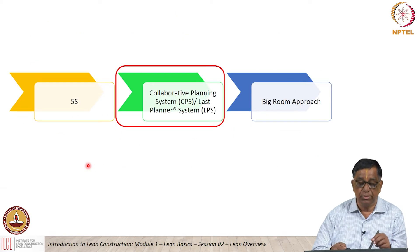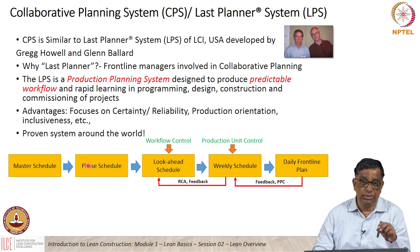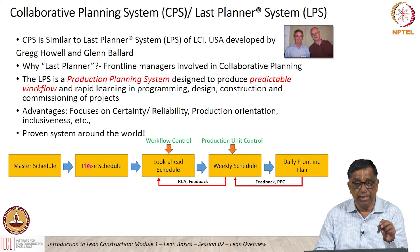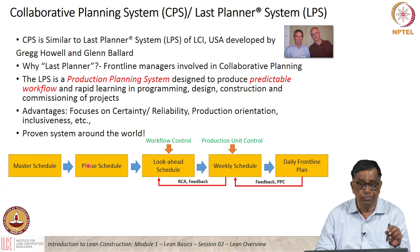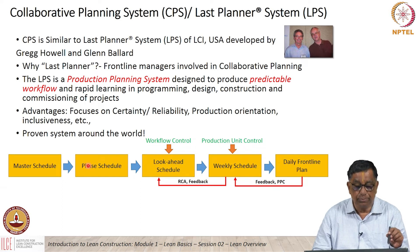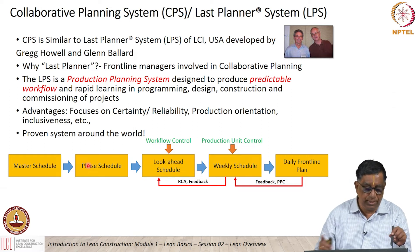Another very important tool is CPS, the Collaborative Planning System, which is a takeoff from the Last Planner System developed by Dr. Glenn Ballard and Mr. Greg Howell. Here, instead of only the planning manager and planning team, we also involve frontline managers as part of the planning work — that is why it is called the Last Planner System. We then invoke collaboration between all stakeholders through a big room approach. CPS is a production planning system designed to produce predictable workflow — very important to note. It covers programming, design, construction, and commissioning of projects.